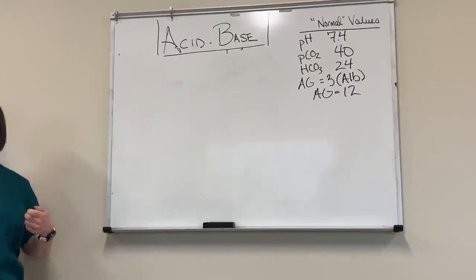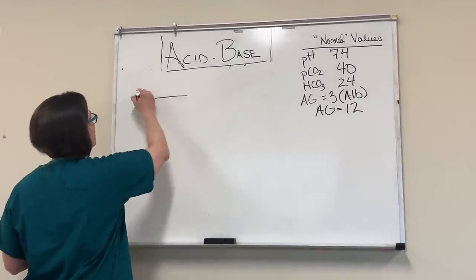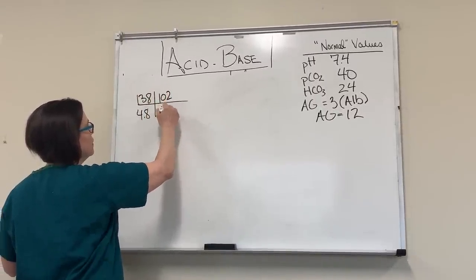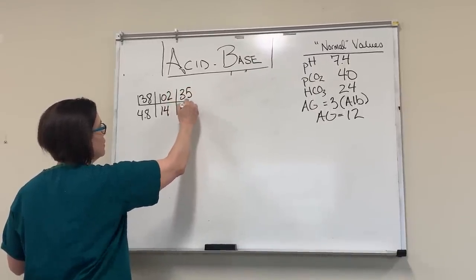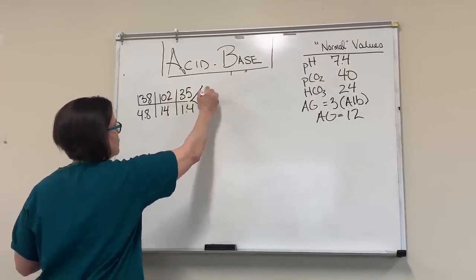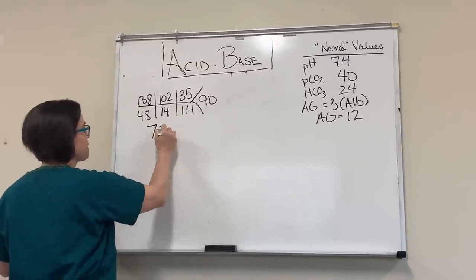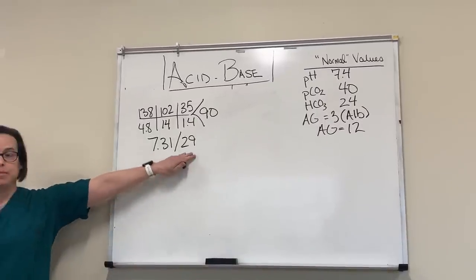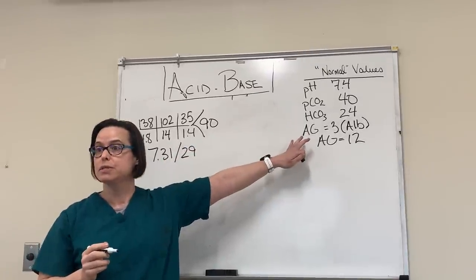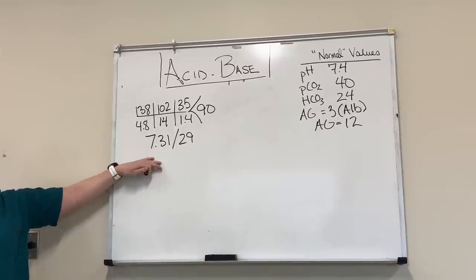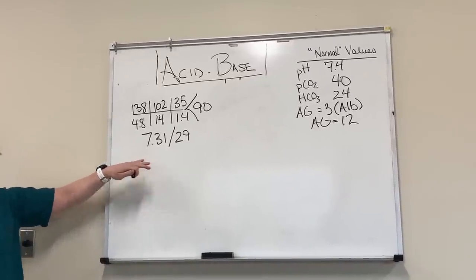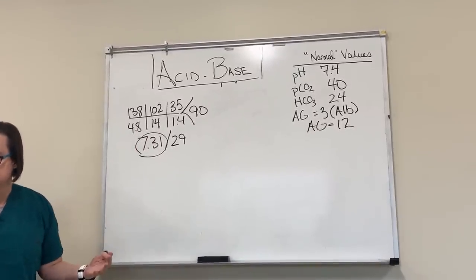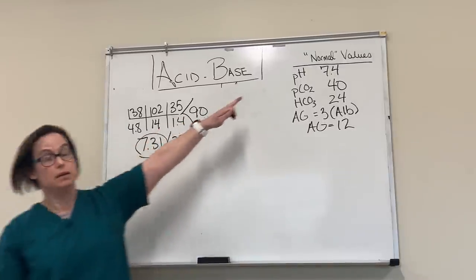I gave you some numbers — the first set: sodium 138, potassium 4.8, chloride 102, bicarb 14, PCO2 35, creatinine 1.4, glucose 90, pH 7.31, and PCO2 29. Our electrolytes, pH, and PCO2 — these should be drawn at the same time if you're going to be doing calculations based on them. The first thing we always want to do is look at our pH. A pH of 7.31 — lower than 7.4 — is acidosis.